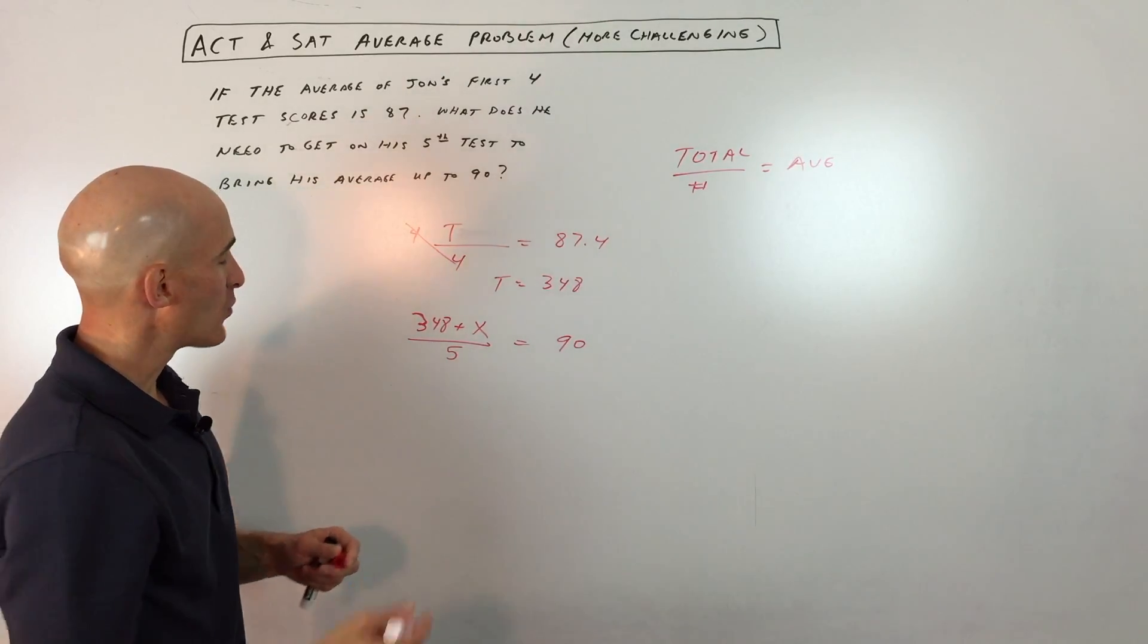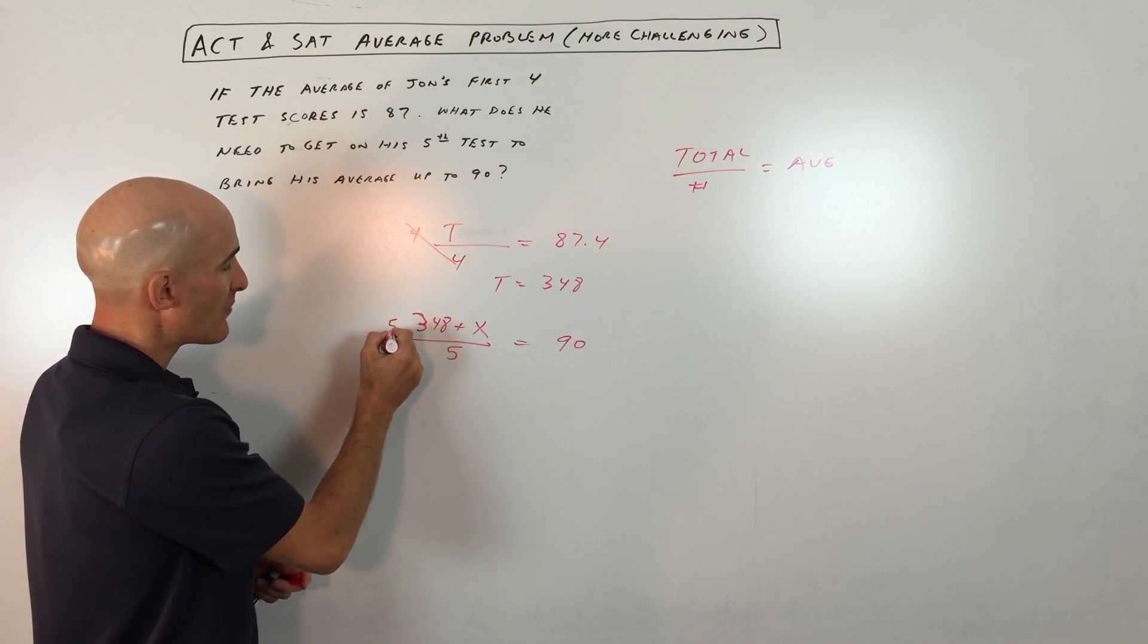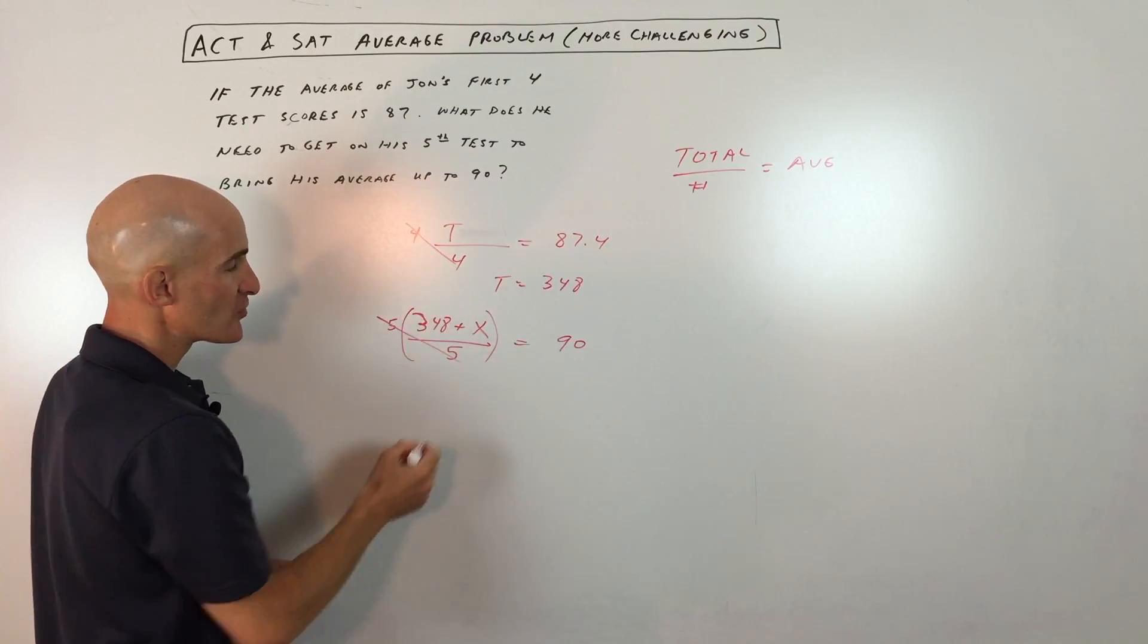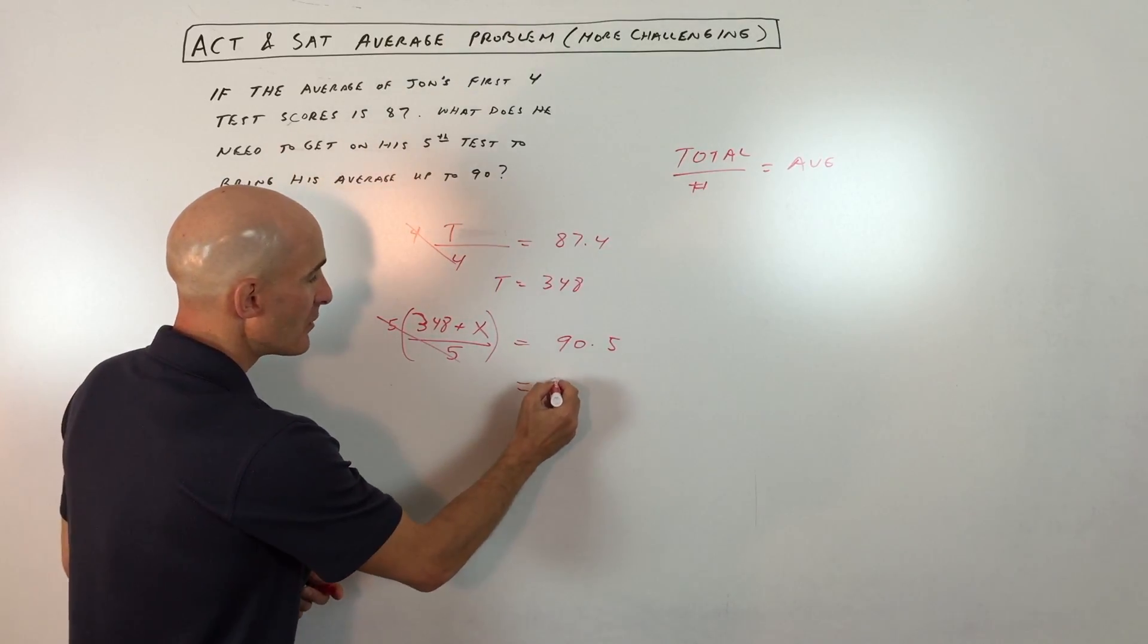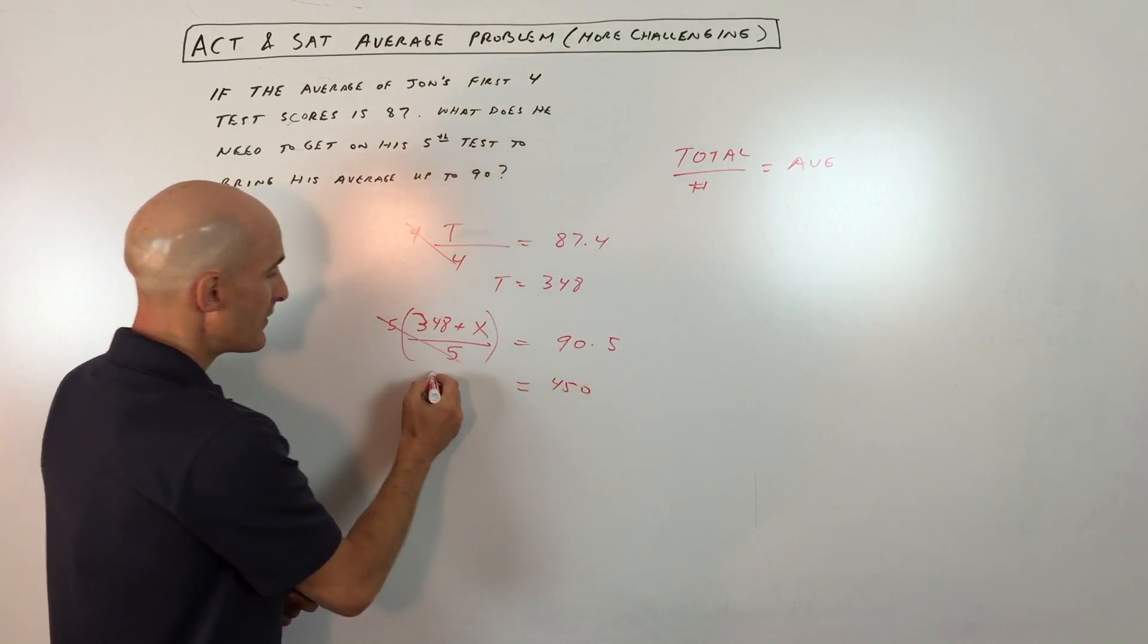What we're going to do now is clear the denominators by multiplying the left side by five so those cancel, and the right side by five to keep the equation balanced. That equals 450.